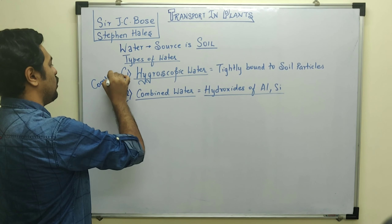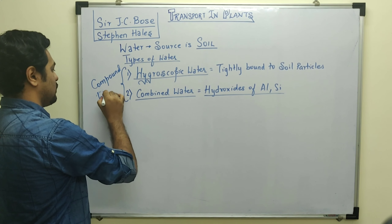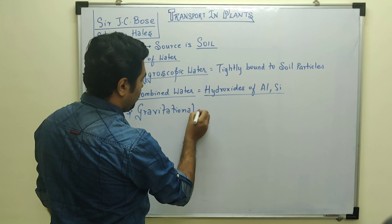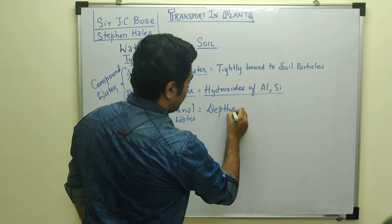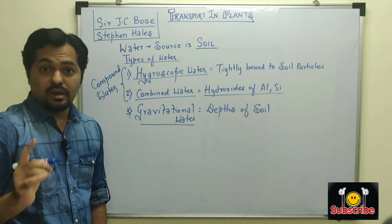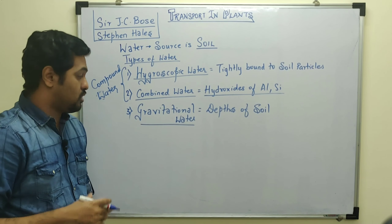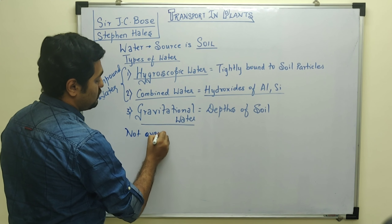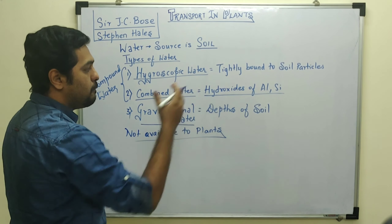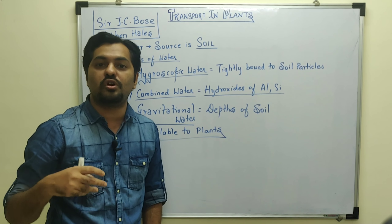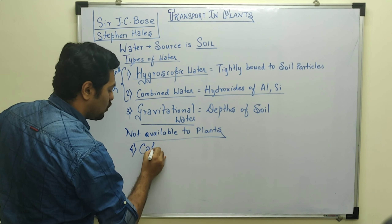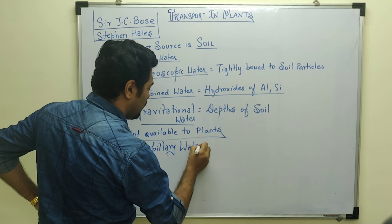In general, hygroscopic and combined water are also grouped as compound water. The third type of water is known as gravitational water. Gravitational water means water which goes to the depths of the soil due to gravitational forces. These three types — hygroscopic water, combined water, and gravitational water — are not available to the plants. Hygroscopic water is tightly attached to soil particles, combined water is in compound form, and gravitational water is too deep for roots to reach.